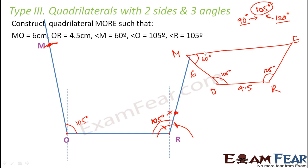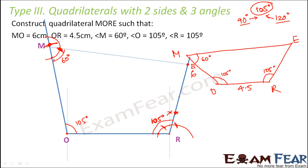Now we are left with drawing angle M = 60°. At point M, draw angle M in a similar way: keep the compass center at M, draw an arc, then from that arc mark 60°. This line from M will meet the line from R somewhere, and that intersection point is point E. That's how you get the complete quadrilateral MORE.